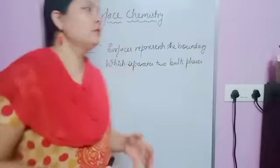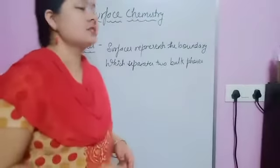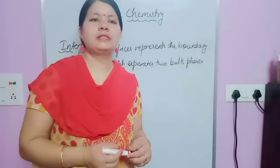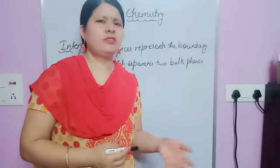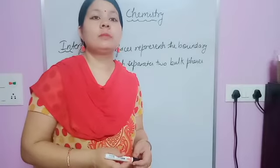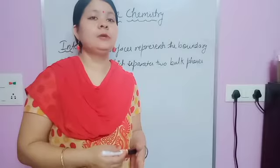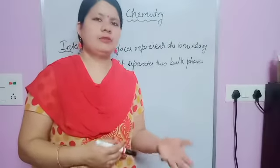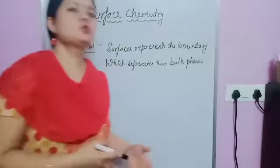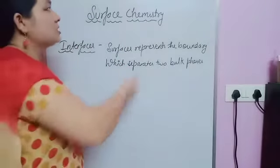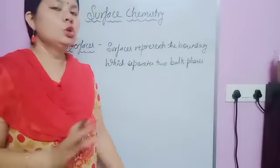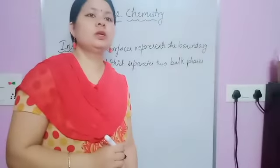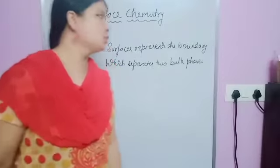Good morning, 12th class. Today we will start with our new chapter — surface chemistry. This is your fifth chapter. Fourth chapter, chemical kinetics, we will do later. That one is also a numerical chapter. First, you can practice different types of numericals for the first, second, and third chapters. This chapter has only theory — no numericals — not a single numerical in surface chemistry. It is scoring and important from your exam point of view.